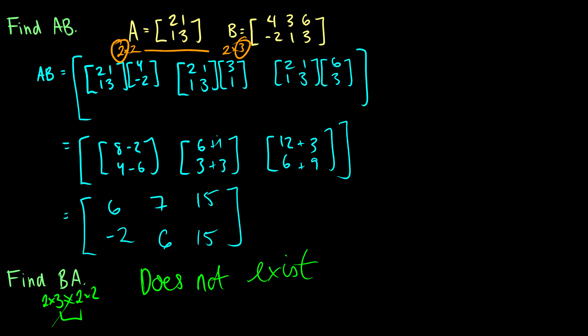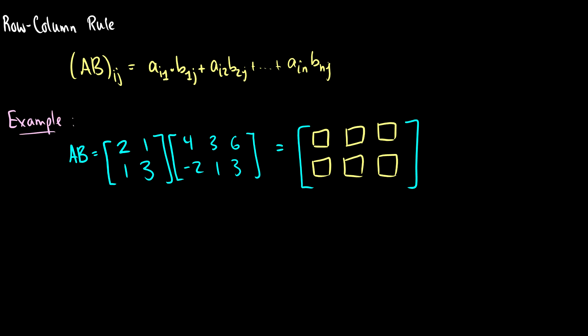Now that we know how to break down a matrix into column vectors, there are faster ways we can do things. This is called the row-column rule. If we have a matrix AB and we want to find the entry at the ith row and jth column, we can do some fancy multiplication. We take A_i1 times B_1j, then A_i2 times B_2j, and so on.